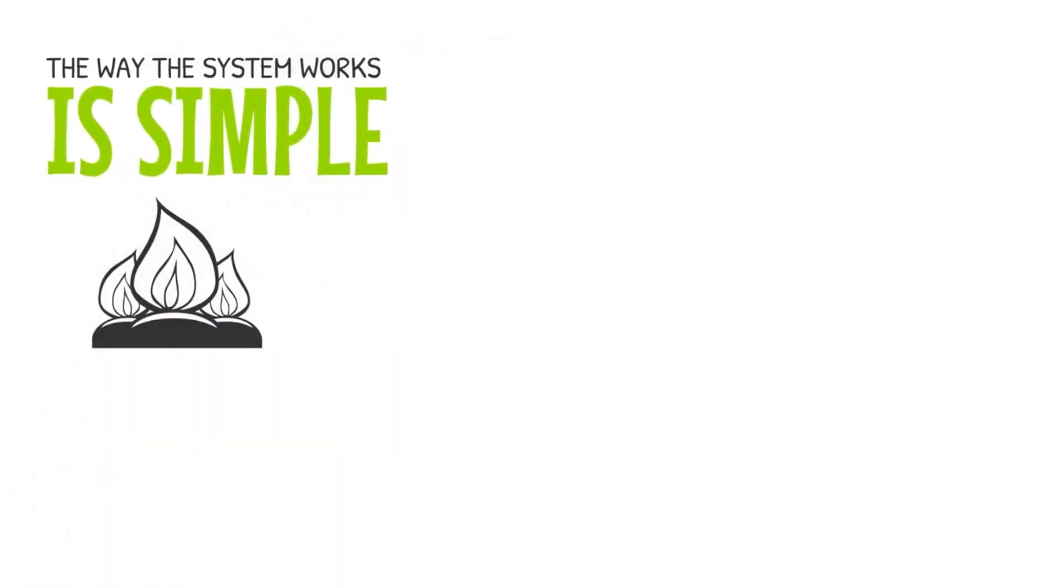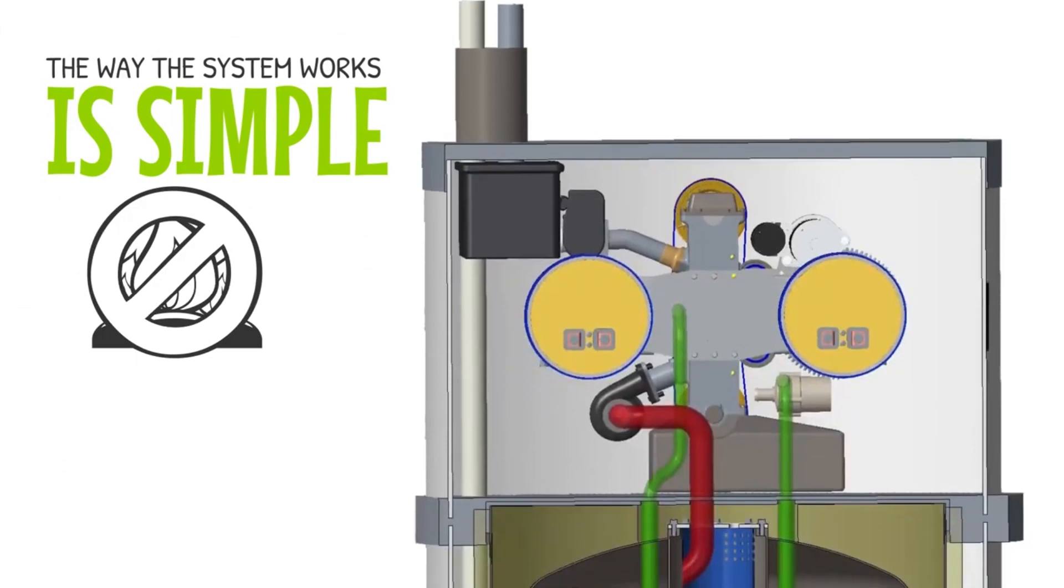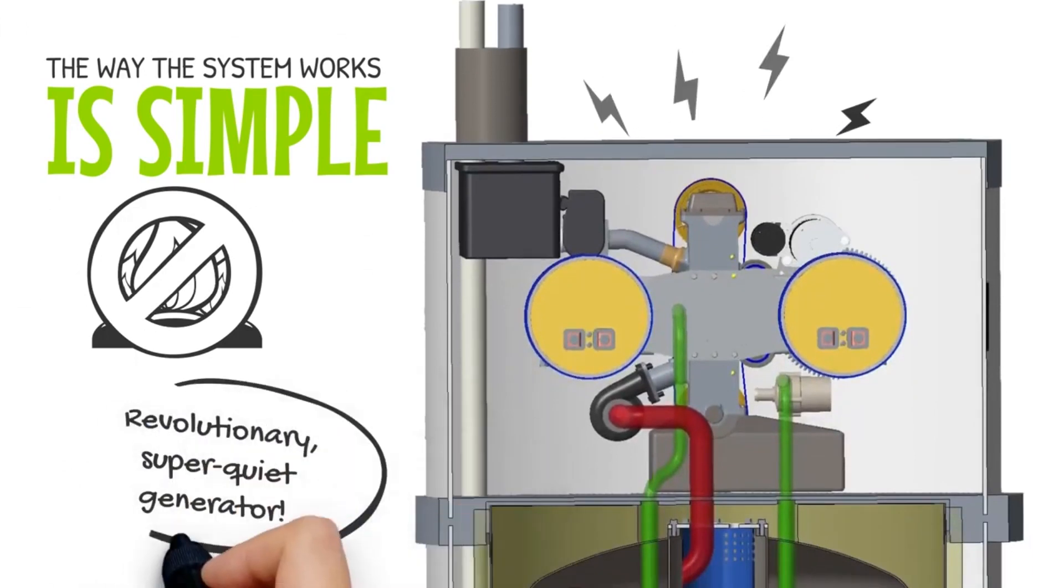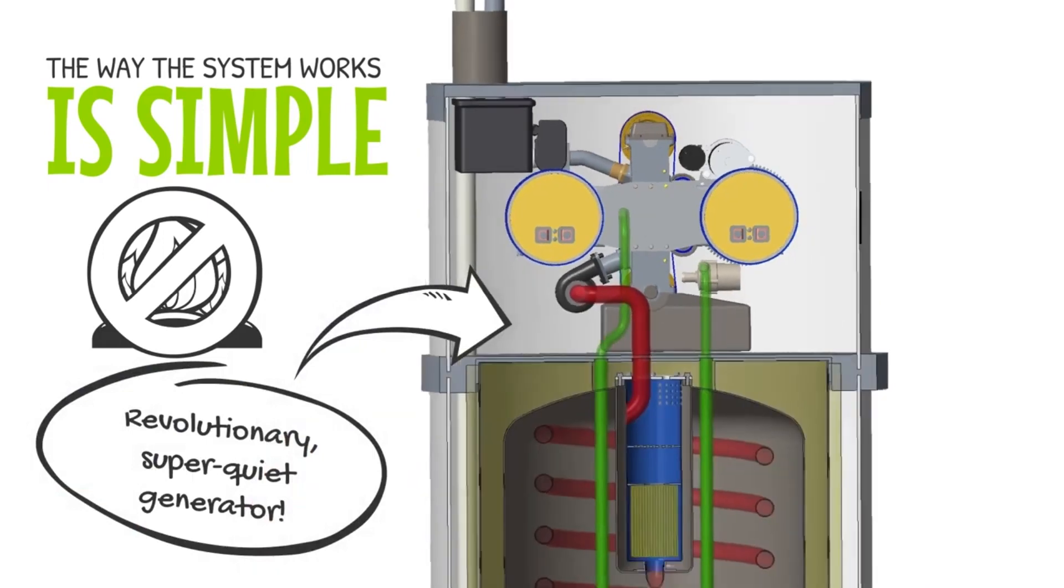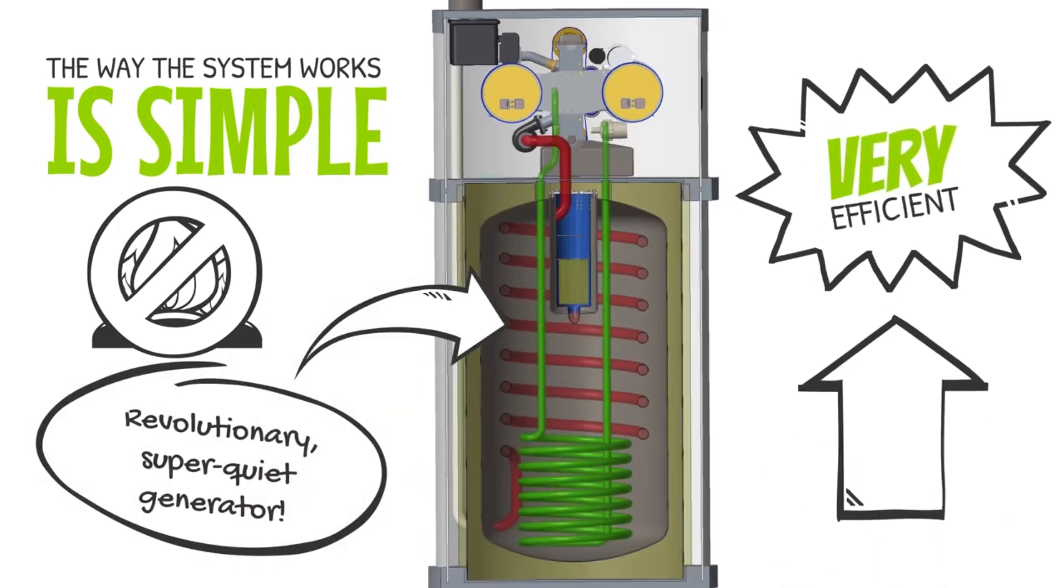The way the E1 works is simple. Instead of just burning gas to heat water, the E1 runs the gas through its revolutionary generator first to make electricity, and then uses the generator's thermal output to heat your water, making the system much more efficient.